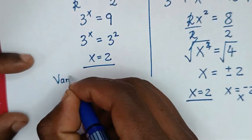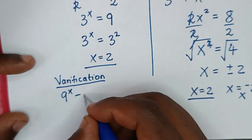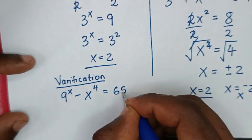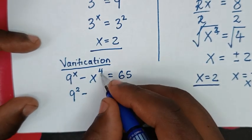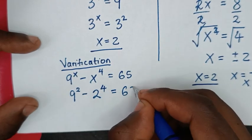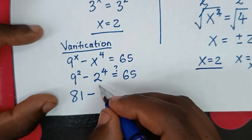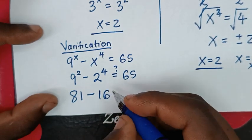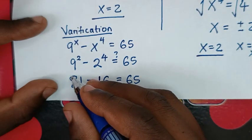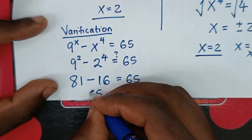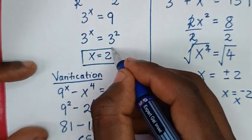Let's do the verification. We'll write our problem: 9 power of x minus x power of 4 is equal to 65. To verify for x equal to 2: it will be 9 power of 2 minus 2 power of 4. Now, 9 squared is 81, minus 2 power of 4, which is 2 times 2 is 4, times 4 is 16. So 81 minus 16 equals 65. Left side and right side are equal, so it is verified true for x equal to 2.